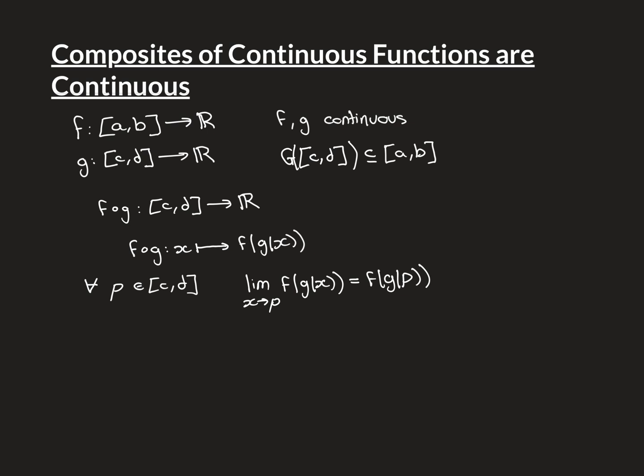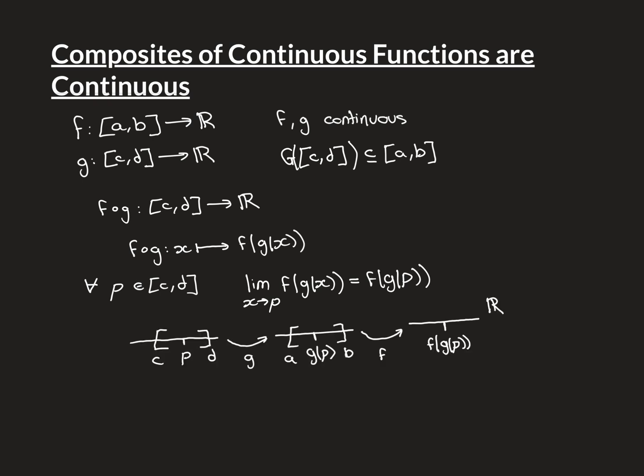Let's prove this. We need to show that for all p in [c, d], the limit as x approaches p of f(g(x)) equals the value f(g(p)). I've drawn a picture to help understand the proof. The domain of the composite function f∘g is the interval [c, d].